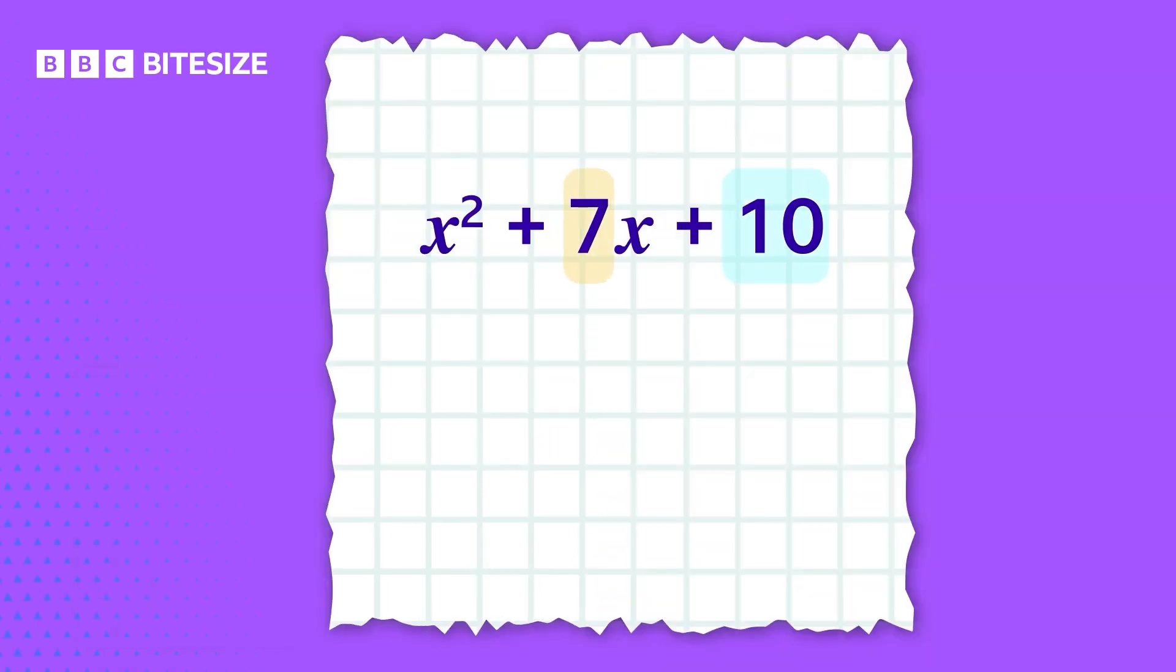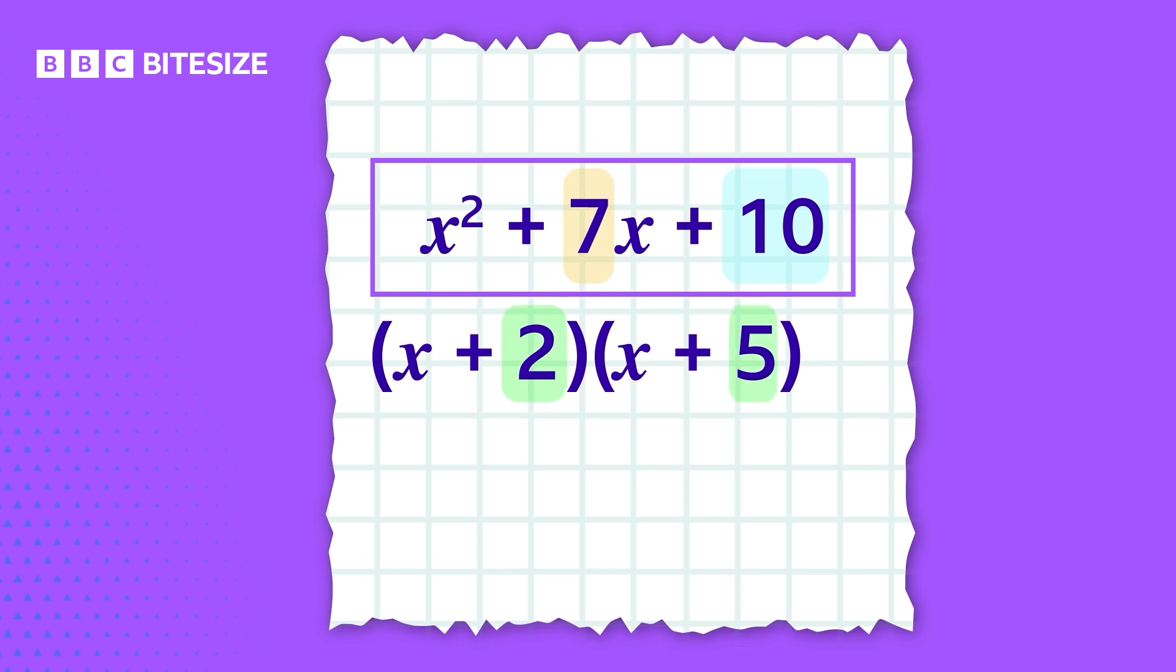To check your answer is correct, substitute these values into the brackets, x plus 2 and x plus 5, and multiply out. Here we'll use the grid method, but you could use any method that you feel comfortable with.